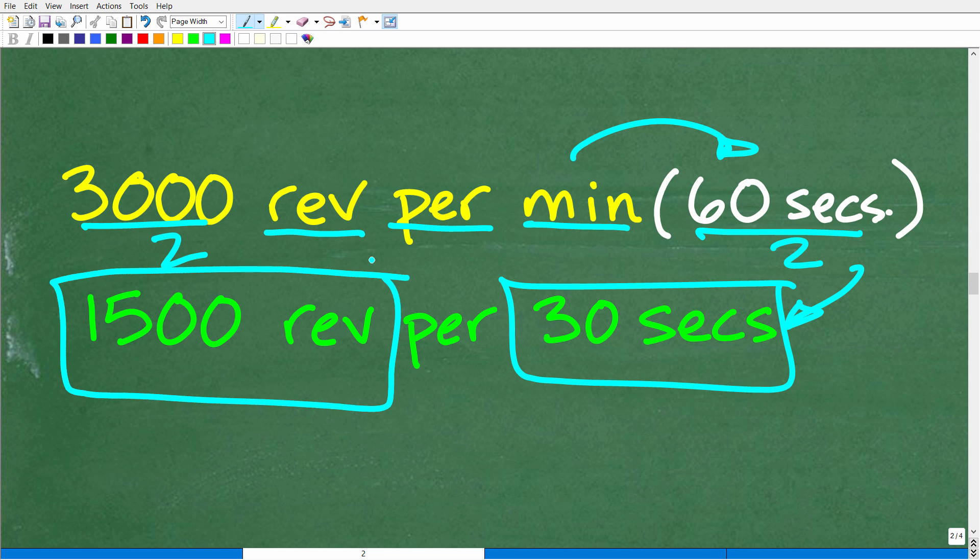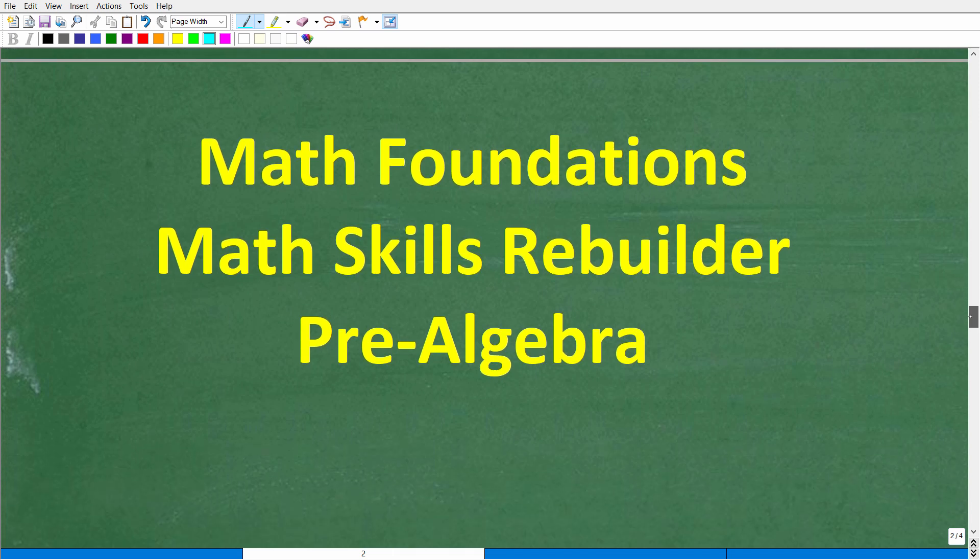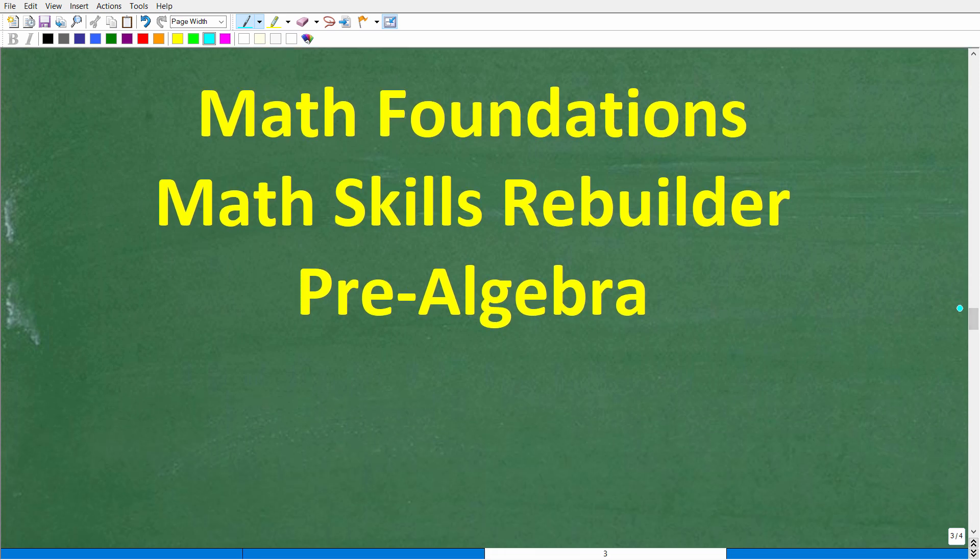So the engine is going to be going 1,500 revolutions in 30 seconds. All right, so hopefully you enjoyed this problem. And if you need additional help with basic math and things like percent, well, I have a few recommendations for you. Check out these courses. You can find links to these in the description of this video.